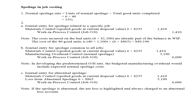To journalize the entry for spoilage common to all jobs: on the debit side, put materials control or cash control for the value of the spoiled goods at the current disposal value — 6 units multiplied by $235 per unit. Work in process control will be credited with $6,600, and the difference between the debit and the credit will be recorded as manufacturing overhead control.